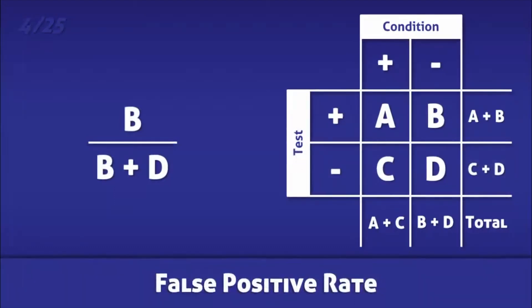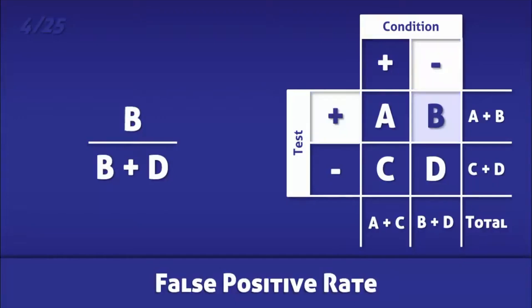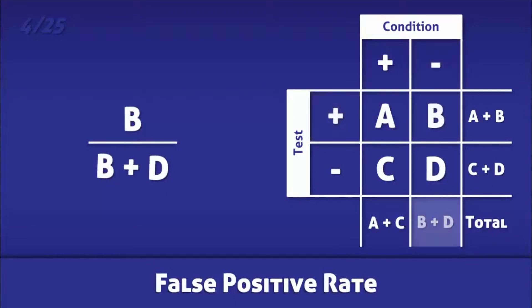The false positive rate is the proportion of people without a condition that test positive for it. It is calculated by dividing the number of false positives by the total number of people without the condition.